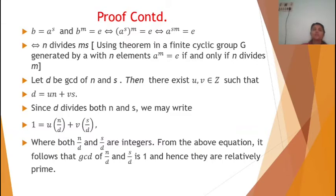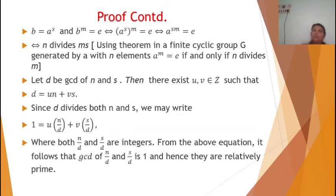Using the theorem for a finite cyclic group generated by a with n elements: a raised to m equals e if and only if n divides m. So here, n divides sm. Let d equal GCD(n, s). By the GCD definition, there exist integers u and v such that d equals un plus vs. Since d divides both n and s, we can write 1 equals u(n/d) plus v(s/d), where n/d and s/d are integers. This shows that GCD(n/d, s/d) equals 1, meaning n/d and s/d are relatively prime.